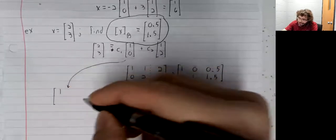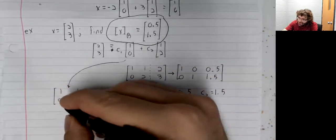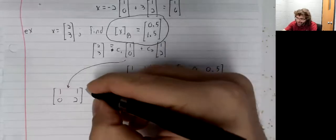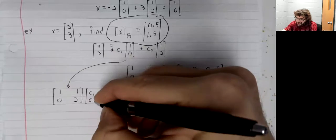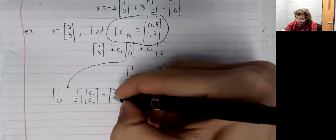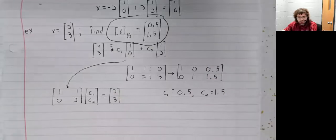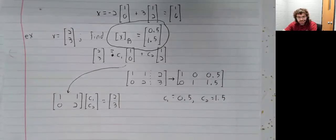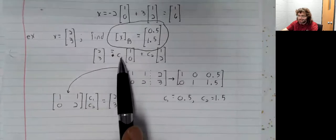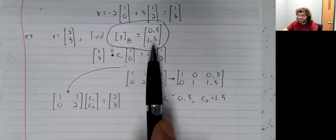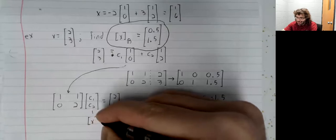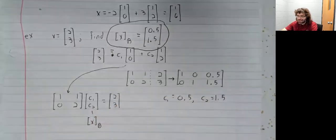So in particular, it's this matrix times an unknown vector. C1, C2 equals the vector 2, 3. And now, C1 and C2 ended up being the coordinates of this vector. C1 and C2 are the coordinate vector of x with respect to b.